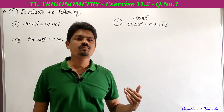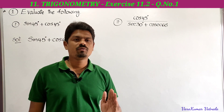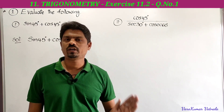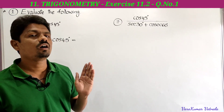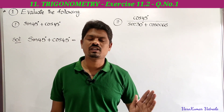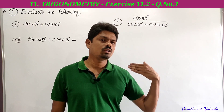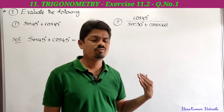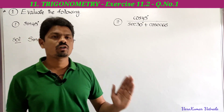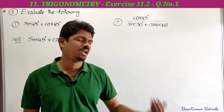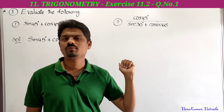There are totally five bits in the first problem. The first bit is: sin 45 plus cos 45 degrees. Before solving problems from Exercise 11.2, you must have a clear idea and learn each and every value of trigonometric ratios for specific angles. This exercise depends entirely on the table values of trigonometric ratios for some specific angles — very, very important.